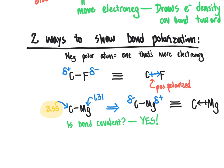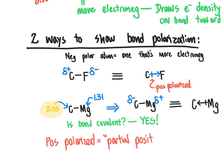This is how we show the polarization of covalent bonds — the partial positive or partial negative charge that is present. When we use the term positively polarized, we describe that as a partial positive charge on the atom; partial negative charge indicates the atom is negatively polarized. We call it a partial charge because it results from bond polarization rather than the full transfer of electrons, which only occurs in ionic bonds. With that, we are done with this topic and will move on to the next.